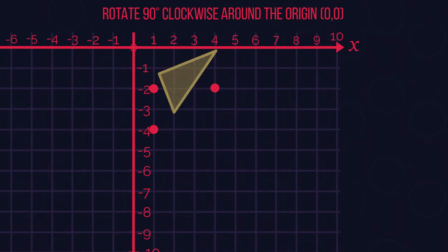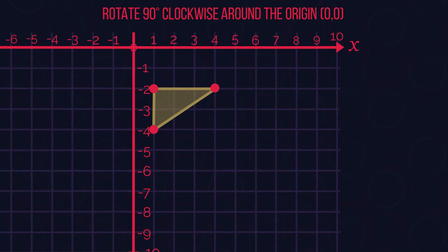We have our triangle, so join up the points. If the question wanted us to rotate it 180 degrees, then we would have just done each point twice. So 90 degrees to where it currently is and then another 90 degrees. So let's carry on rotating our triangle.